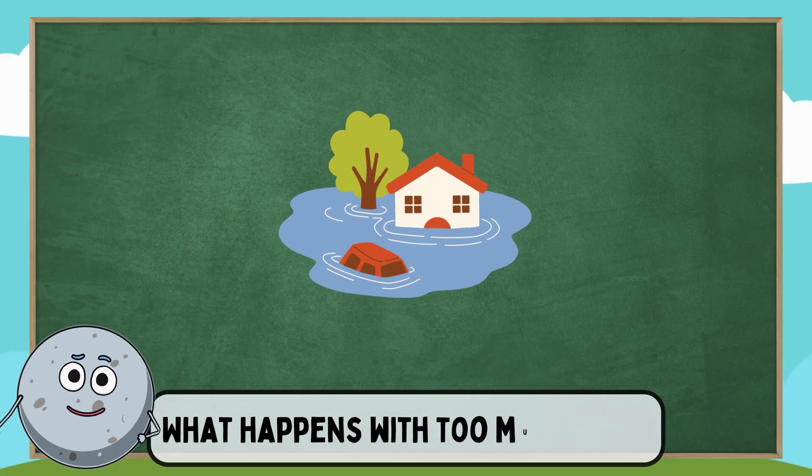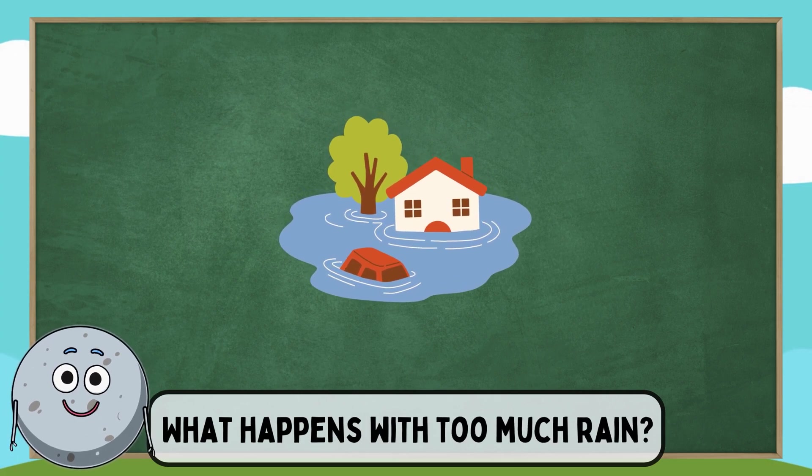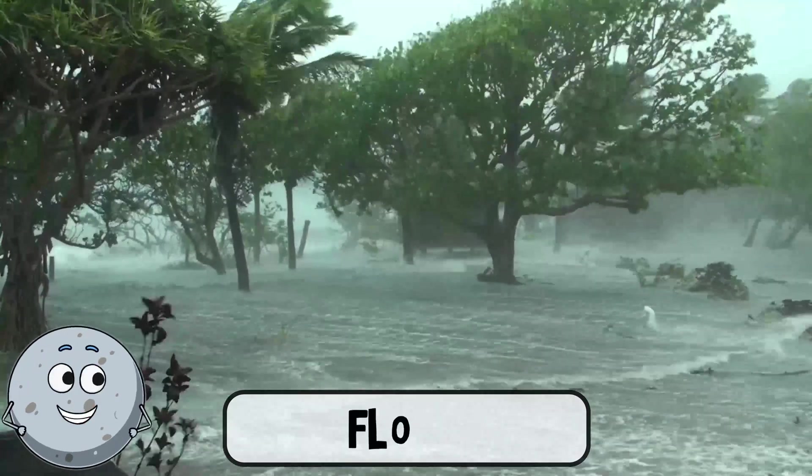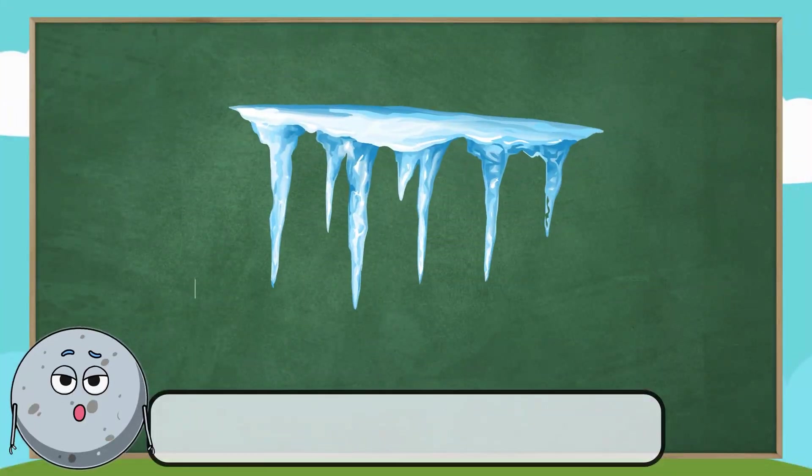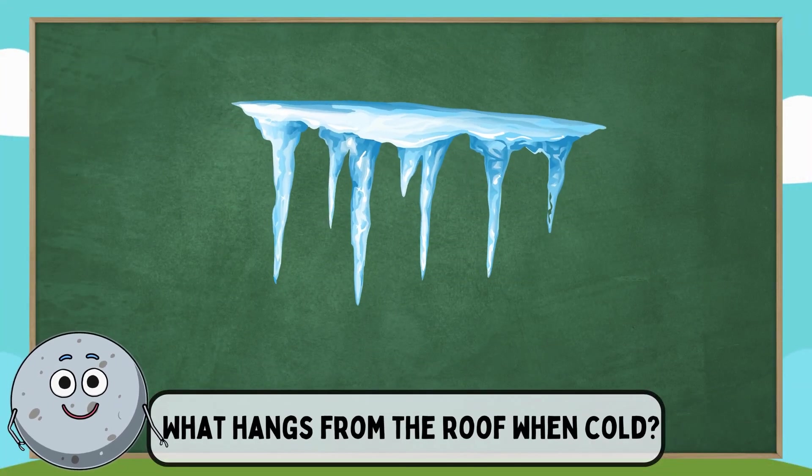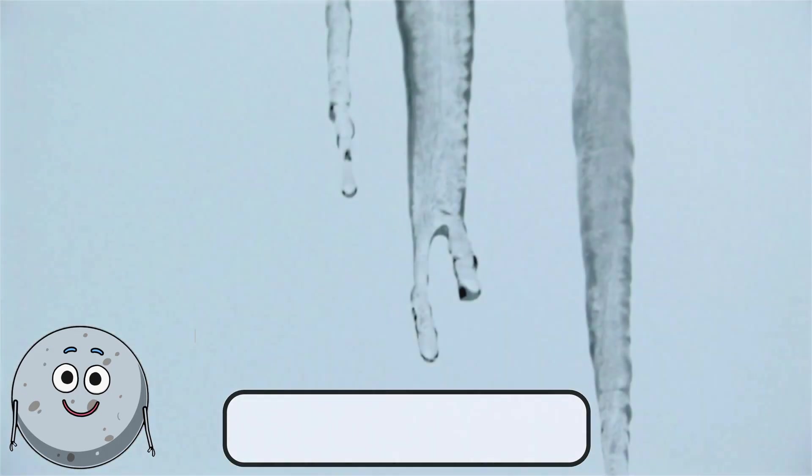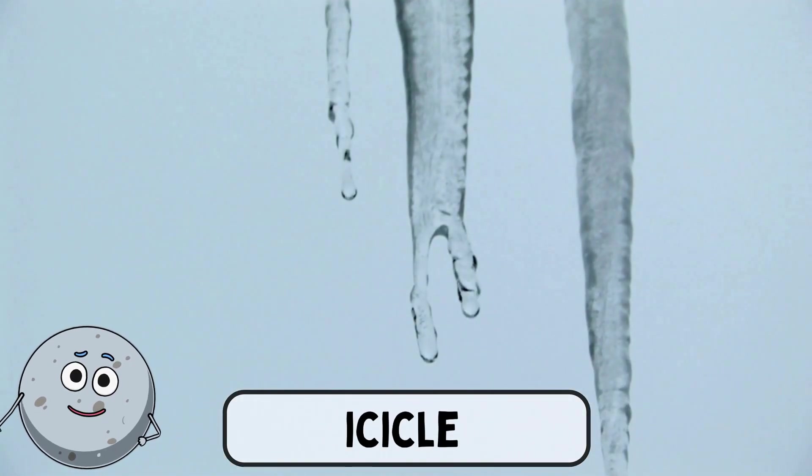What happens with too much rain? A flood happens. What hangs from the roof when cold? An icicle hangs from the roof.